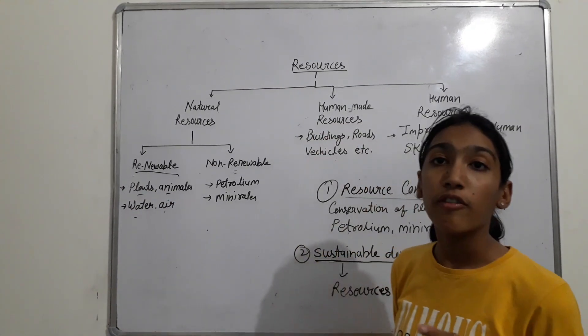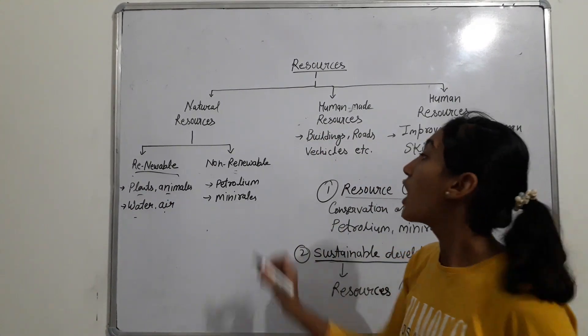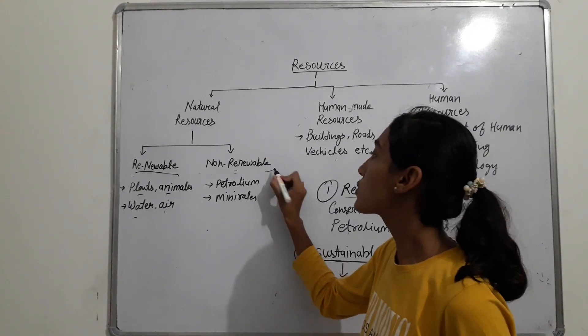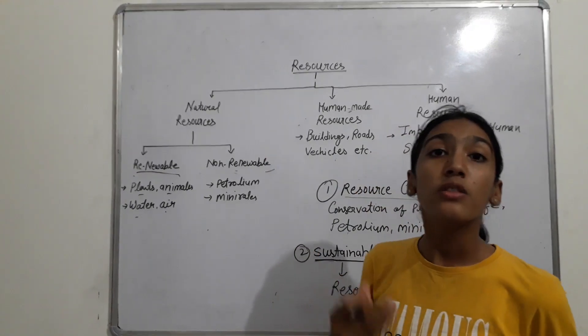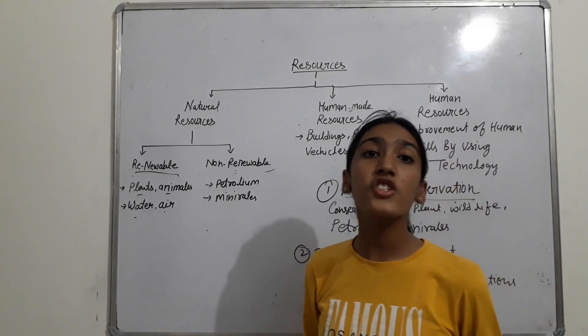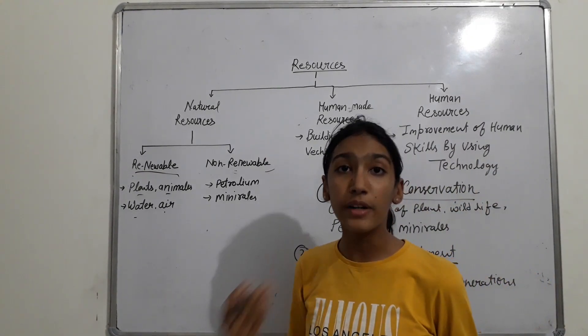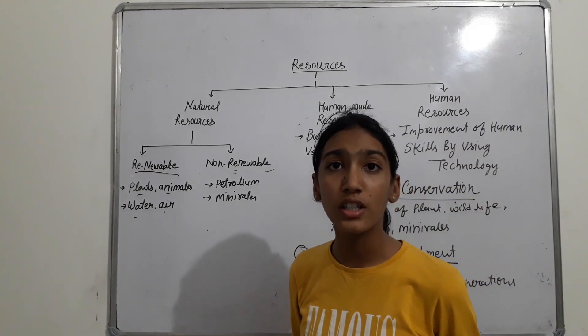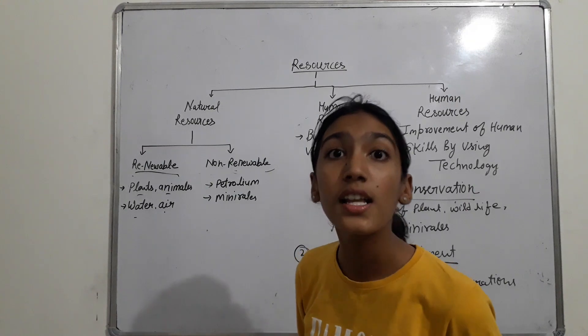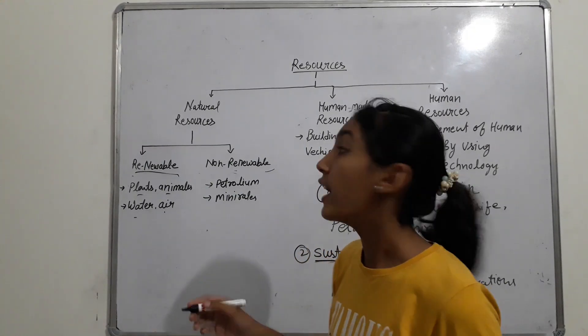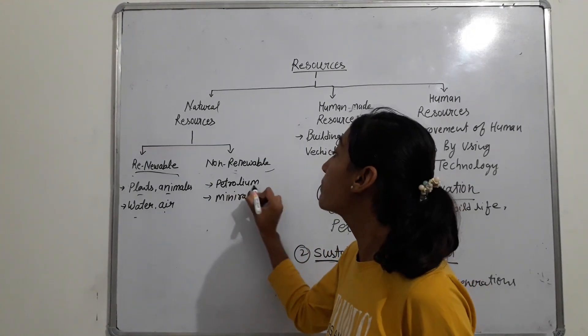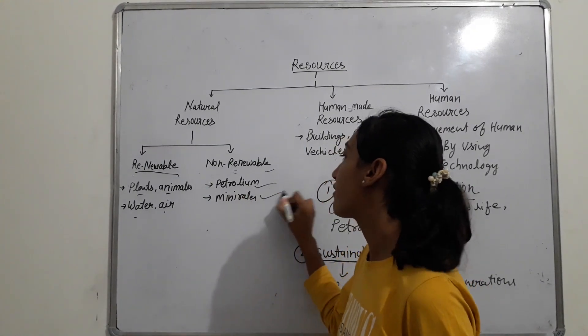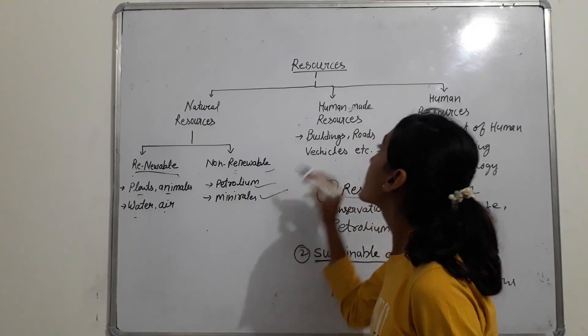The second type is non-renewable resources. Non-renewable resources are those which have limited stocks, like petroleum and minerals.